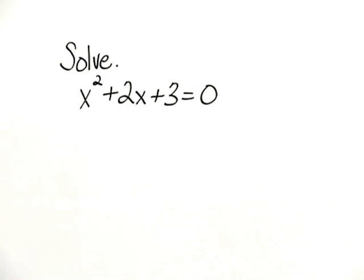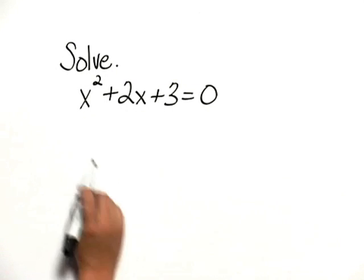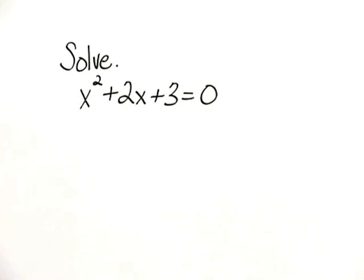Solve x squared plus 2x plus 3 equals 0. This does not factor, so we can't use the principle of zero products, so instead we'll use the quadratic formula.